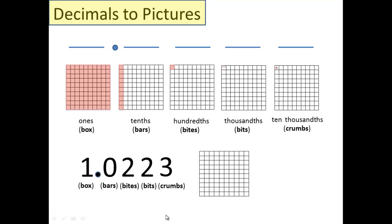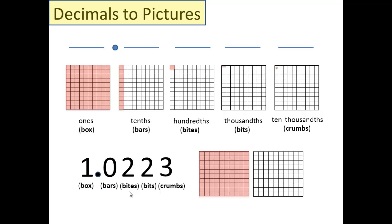How many boxes do we have? 1 is right. Next step — we don't have any bars. We already have this whole box filled in, no bars. Now, in order to draw 2 bytes, we're going to need a whole other empty box. Let's put our 2 bytes in there: 1, 2. There you go. Bits — how many bits do we have? 2. So this is going to get nasty, I told you all. There's your 2 bits — you see them right there? They're way too thick. I apologize for that, but I couldn't draw it any better.